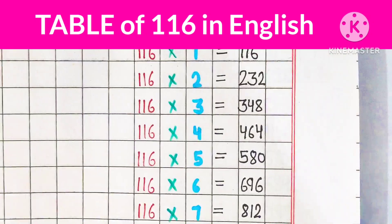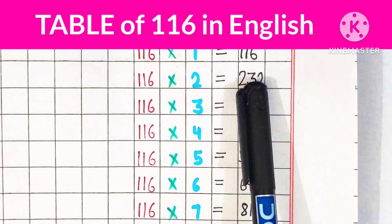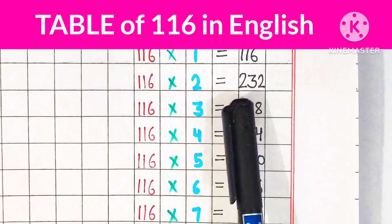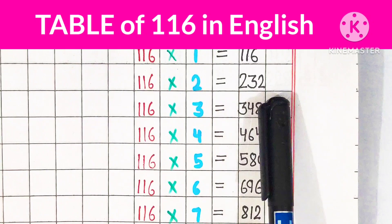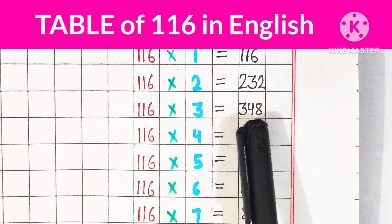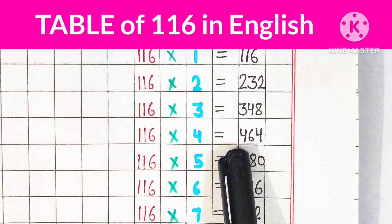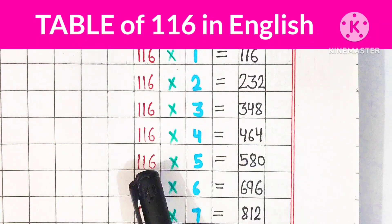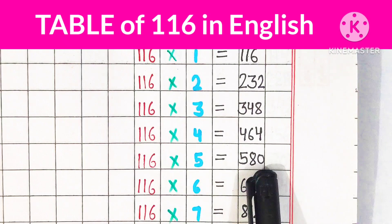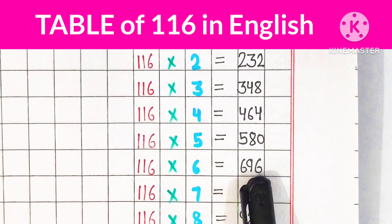Repeat table. 116 1 are 116, 116 2 are 232, 116 3 are 348, 116 4 are 464, 116 5 are 580, 116 6 are 696.